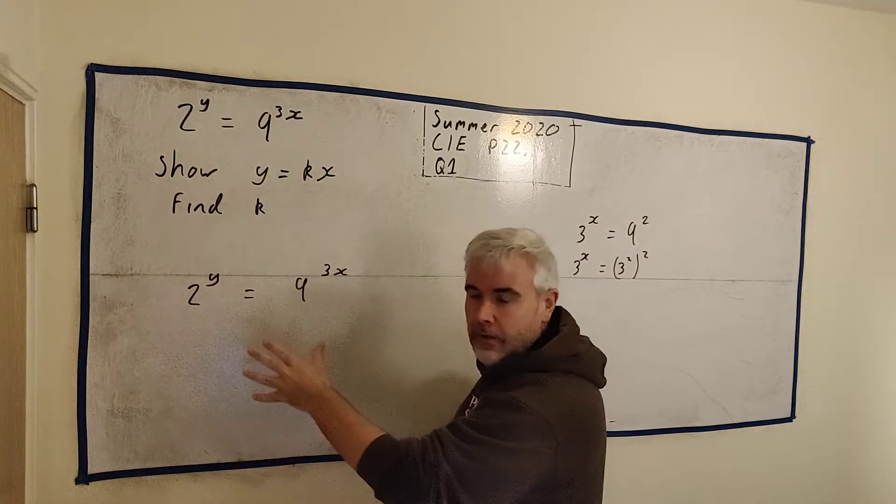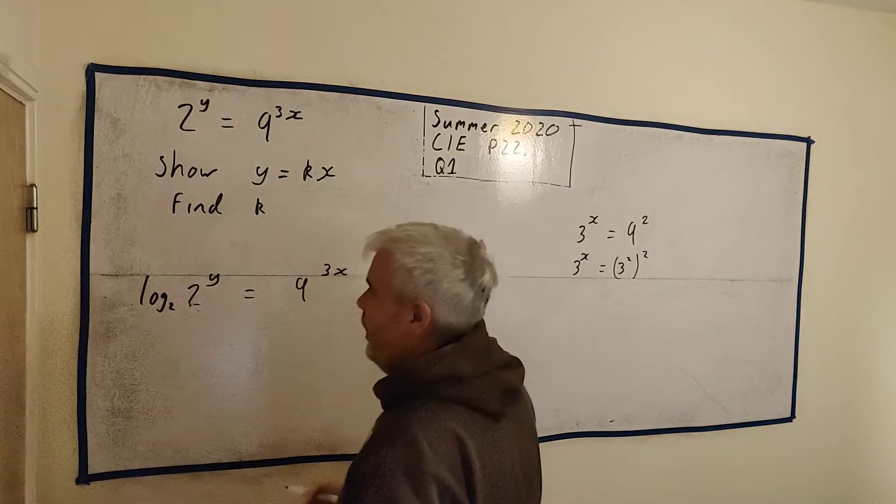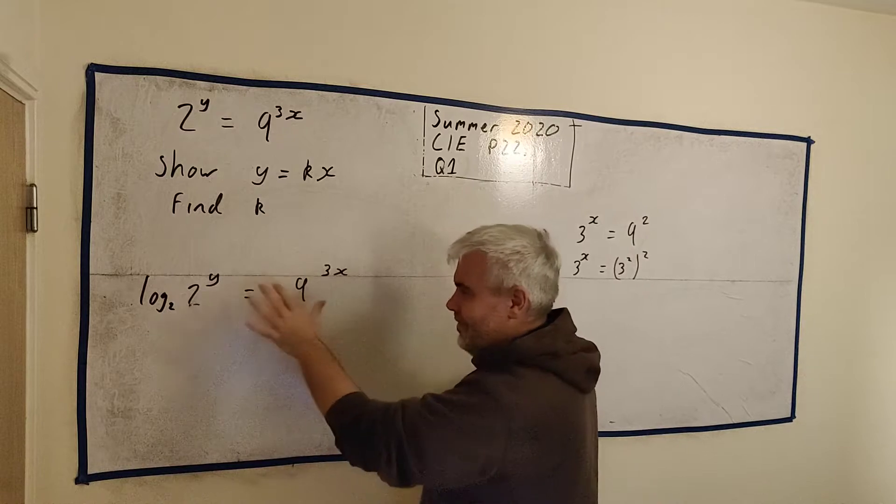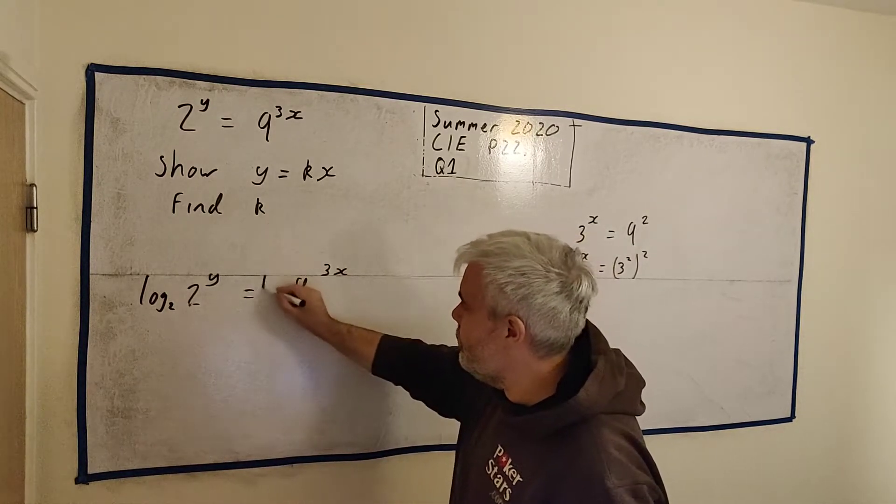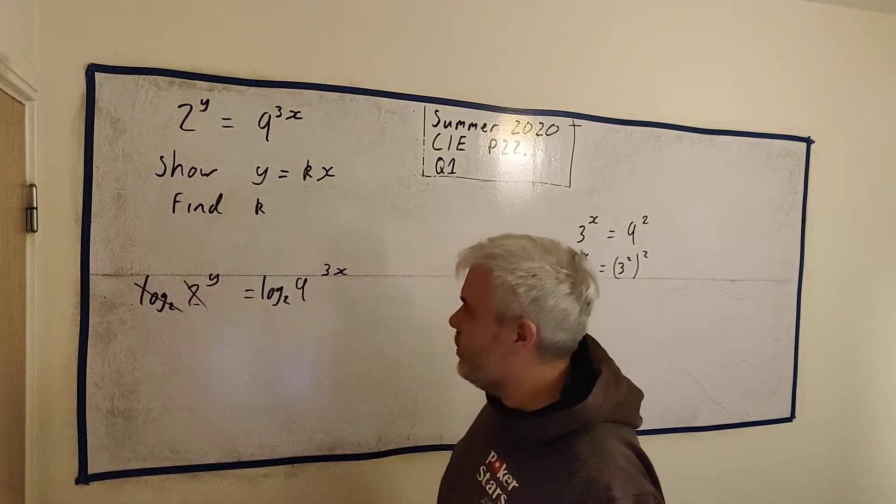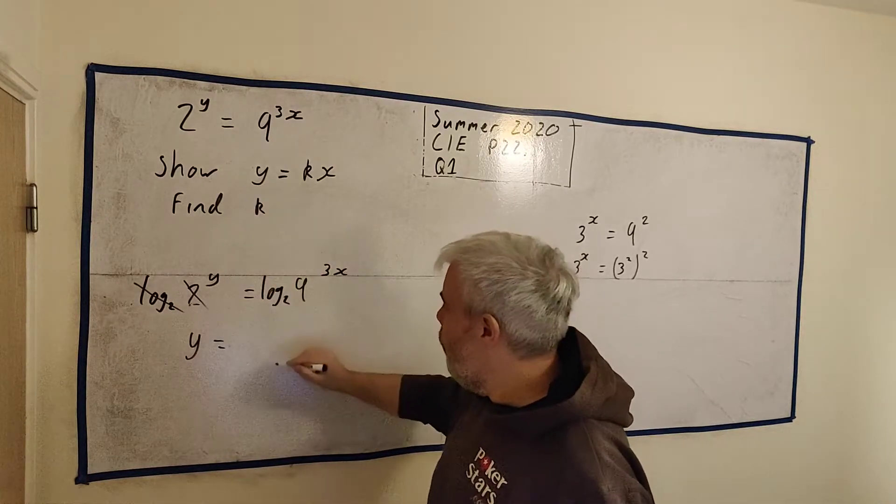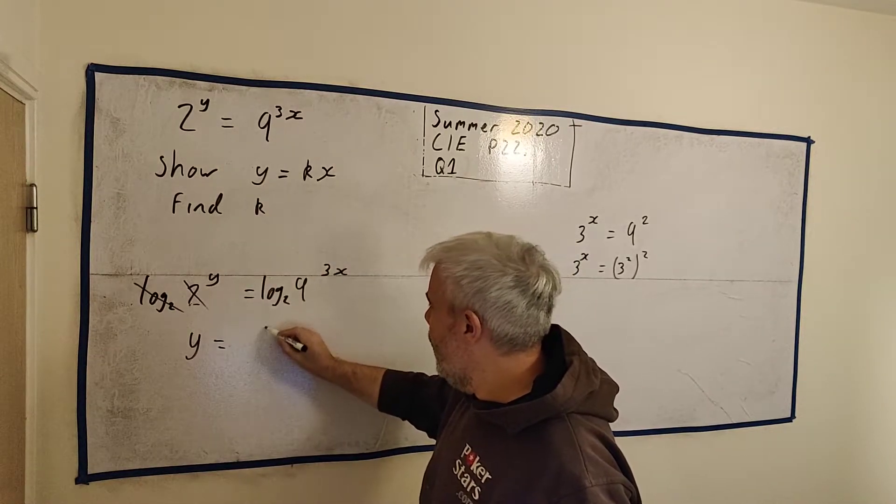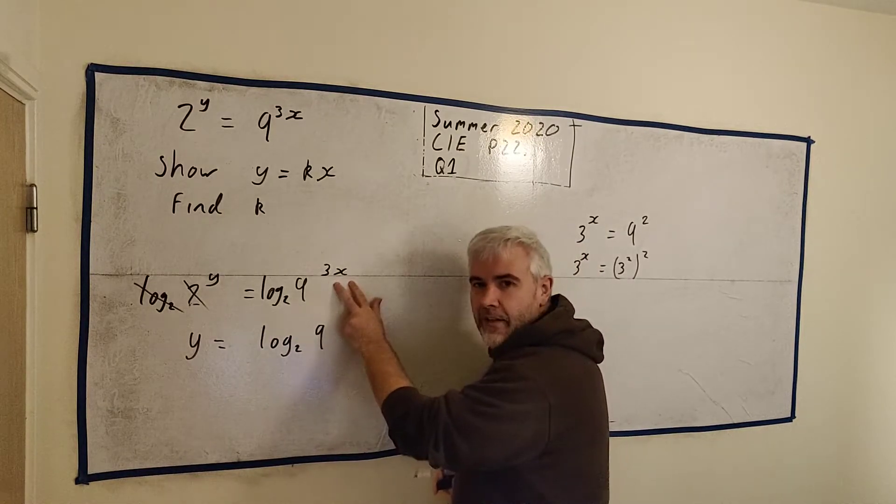To get rid of this 2 here, to destroy it, we could just take log to the base 2 and that will destroy the 2. But that's not very fair or balanced. So we need to do that to both sides of the equation. Log to the base 2. On this side that destroys that. And we're left with y equals, which is what we want. Y is equal to log to the base 2, 9 to the power of 3x.